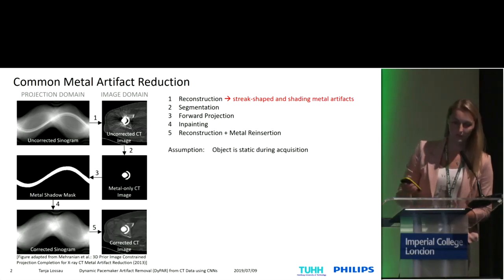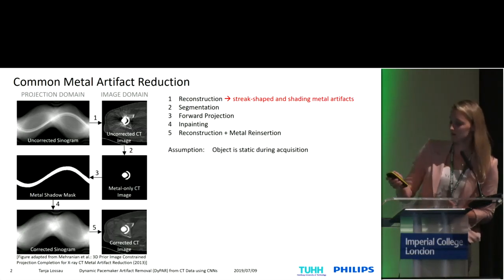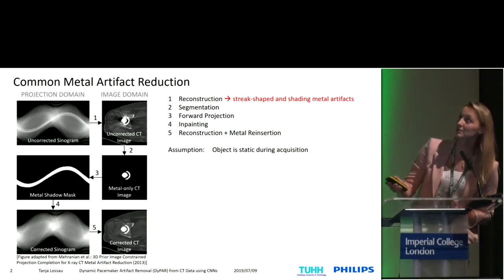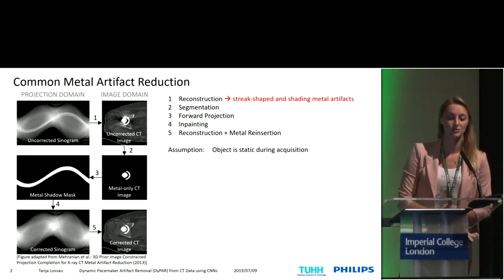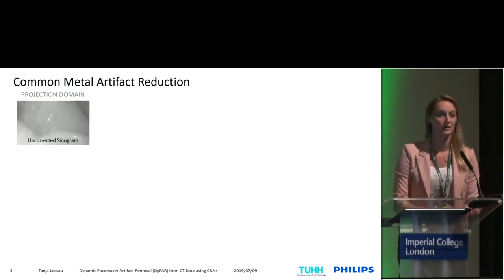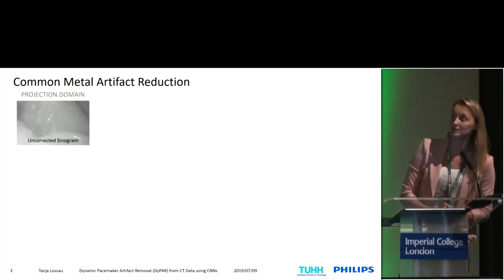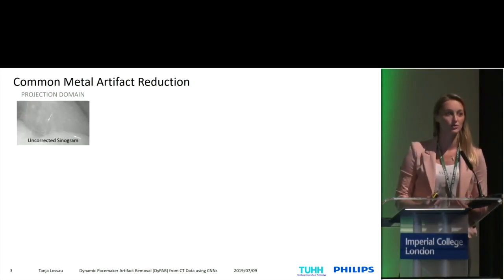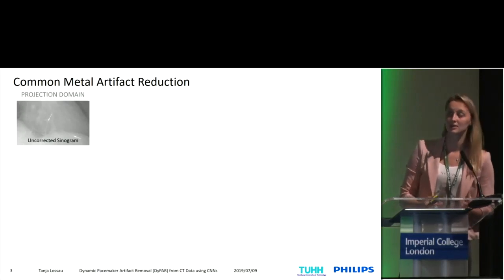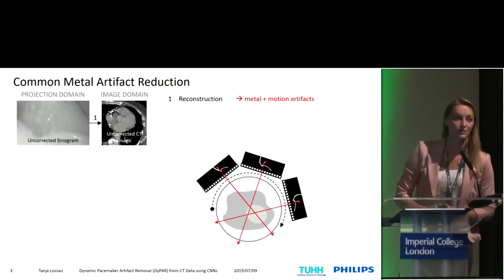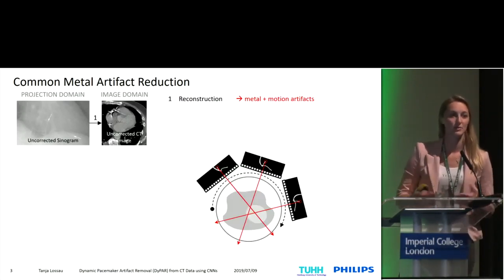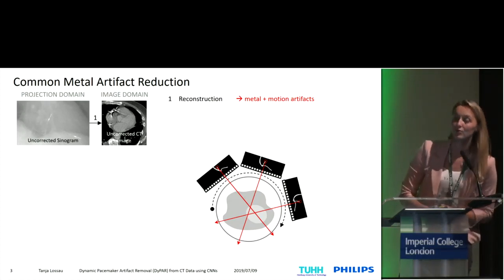So what is the problem here? The problem is that due to the metal segmentation step in the image domain, we implicitly assume that the object is static. And this is not the case for cardiac CT. When we bring motion into the pipeline and start again in the projection domain, you can see one projection view of a clinical case with an implanted pacemaker. Due to the cardiac motion, metal positions are well-defined in each projection view, but not consistent in time. When we perform the reconstruction of an image volume, all these motion states are mixed together, and we have a combination of metal and motion artifacts.